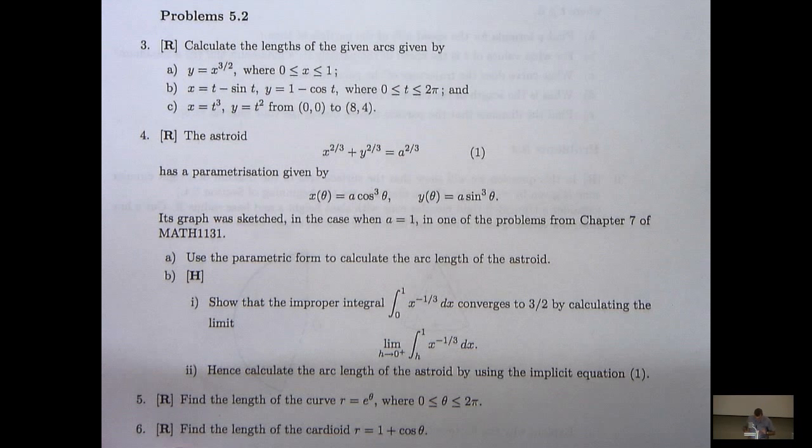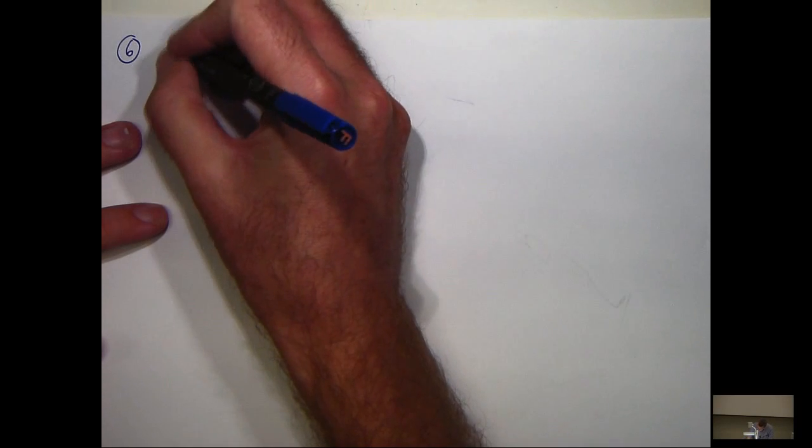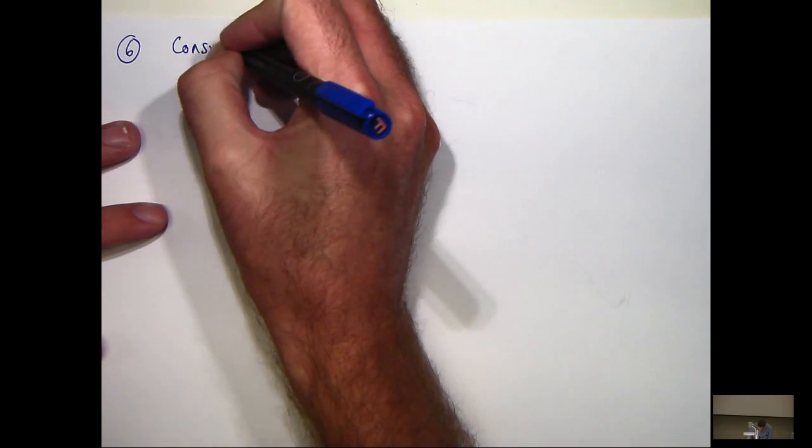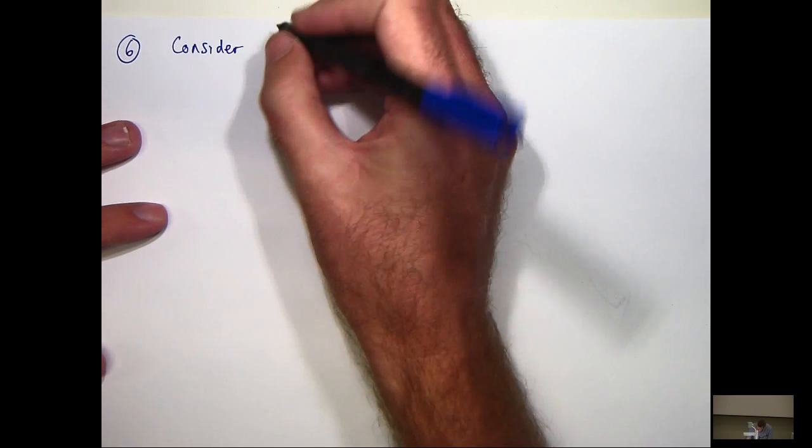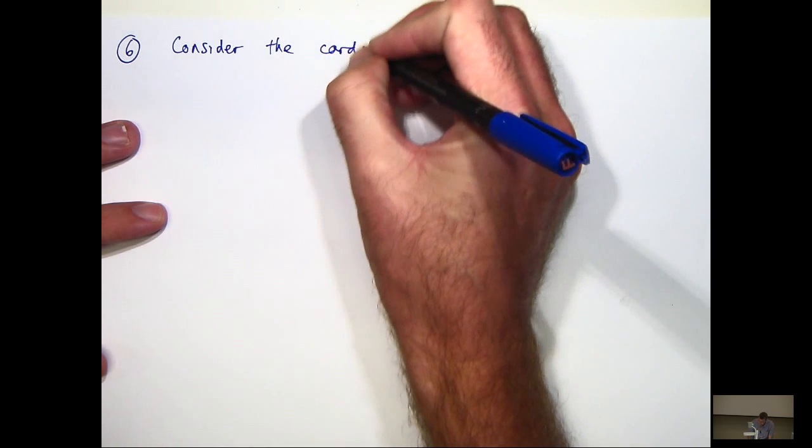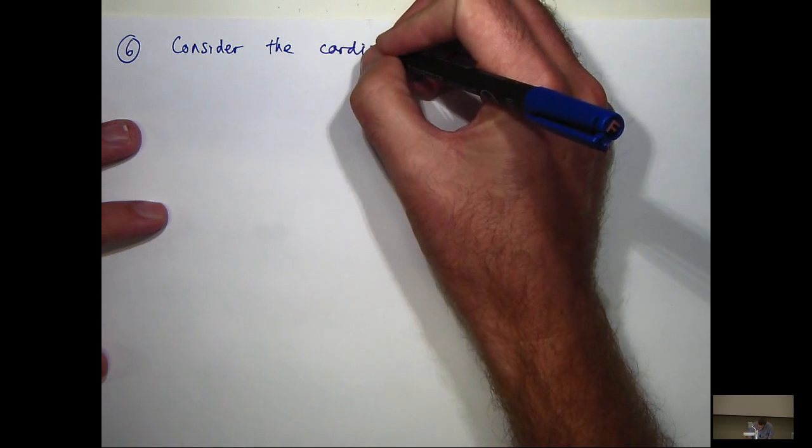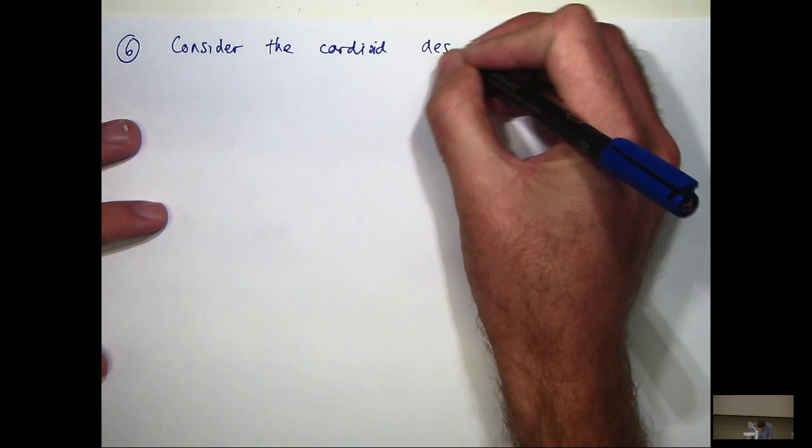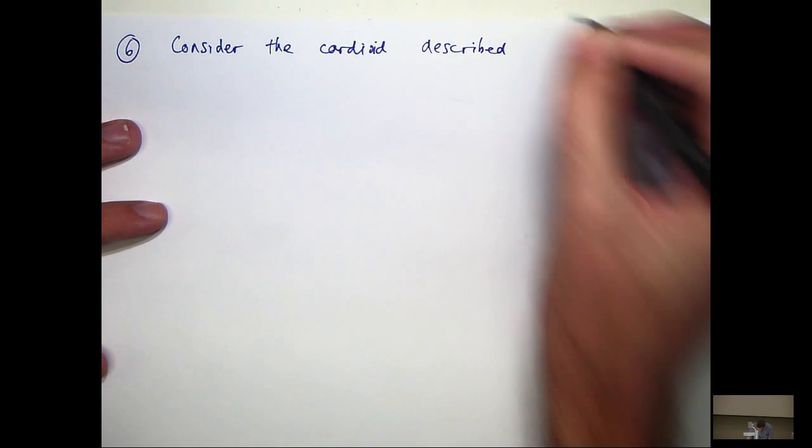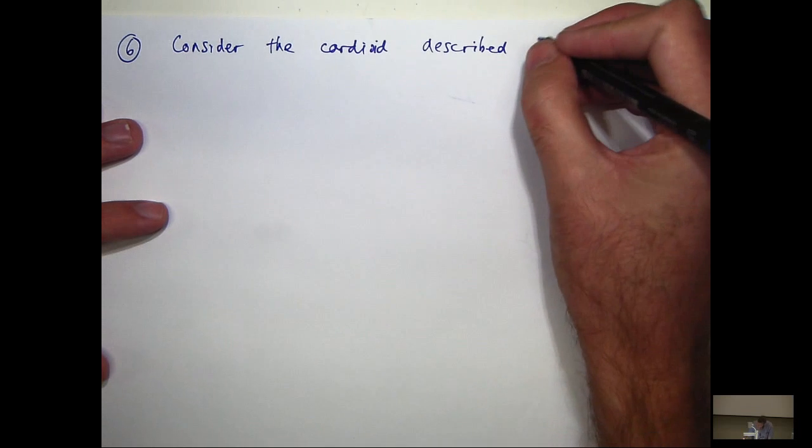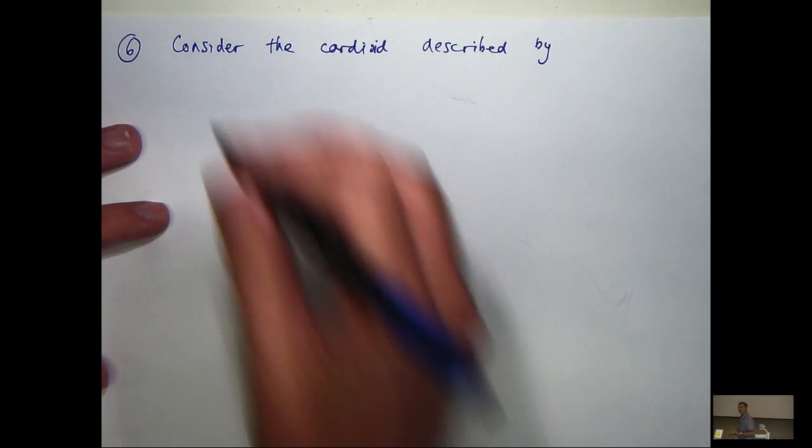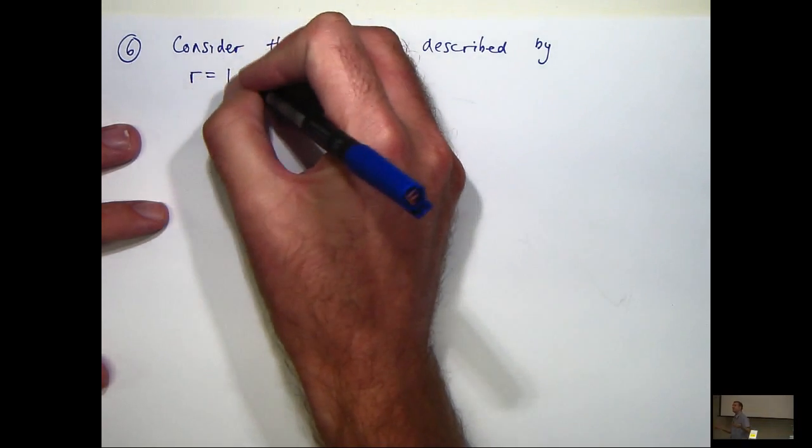Okay, so on to the first problem. The problems today are basically about arc length. Let's have a look. I'm starting with question six in chapter five. We're going to consider the cardioid described or parameterized by the following polar equation.